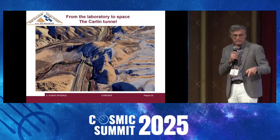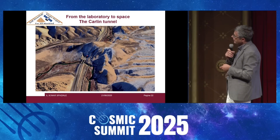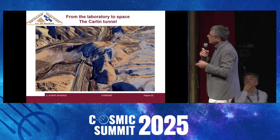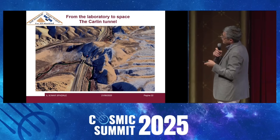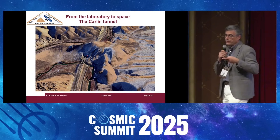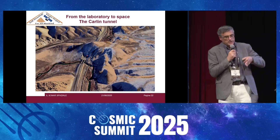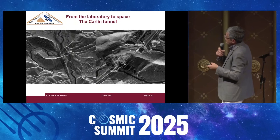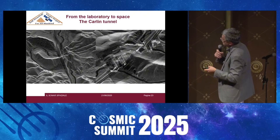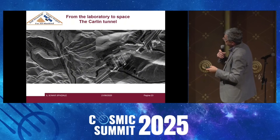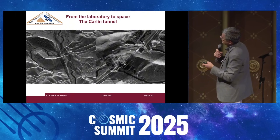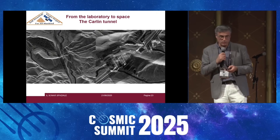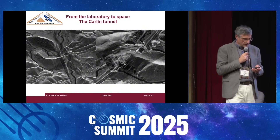We moved to the United States, where we ordered specific SAR images. This is the Carlin Tunnel, a tunnel located in Nevada, where railways pass inside the mountain. We worked to see what was inside the mountain, and here we have our tomographic results — we are able to see the tunnel passing through the mountain. These are our two radar images of the test area.